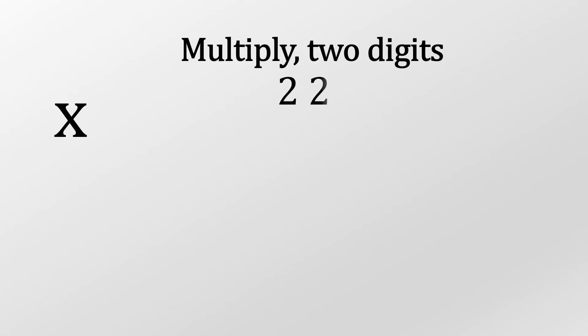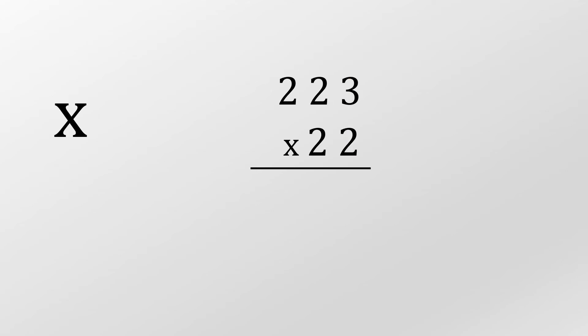Okay, we're going to multiply using two digits. So here is our sum. Two times three is six, pop that down. Two times two, that's four. Two times two again, that's four.